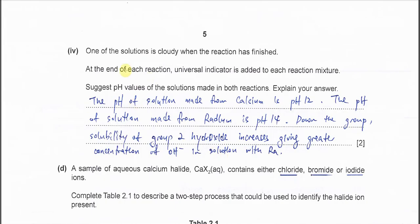Part 4. One of the solutions is cloudy when the reaction has finished. At the end of each reaction, universal indicator is added to each reaction mixture. Suggest pH values for both reactions. It's actually asking the reactions of the calcium and the radium with water. So pH of the solution made from calcium should be around 12. You can put 11, as long as it's lower than 13-14.